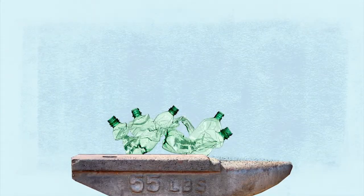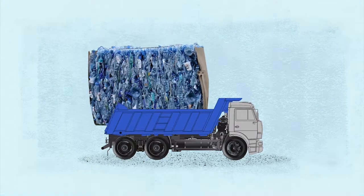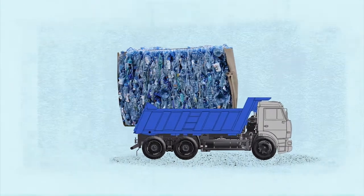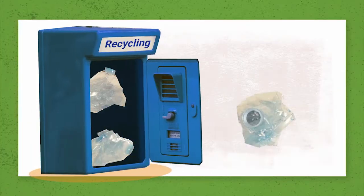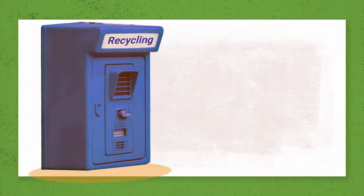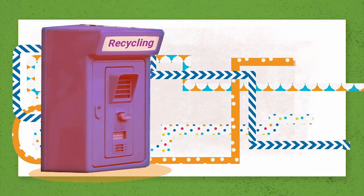After sorting, used PET products are squashed and packed together, ready to be transformed into the recycling process. They are washed and melted at over 240 degrees Celsius, if the intention is to use them for food or drink packaging.